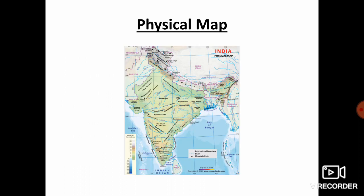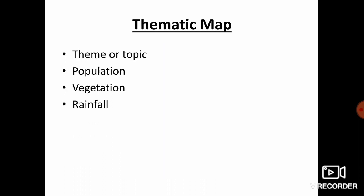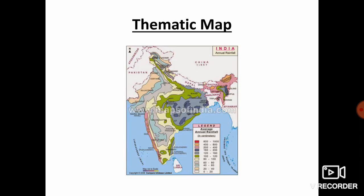This is the image of physical map. Next, thematic map. This type of map usually focuses on a theme or topic such as population, vegetation, or rainfall. This is the image of thematic map.